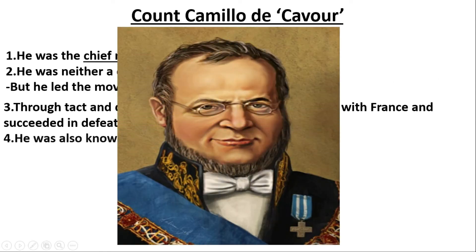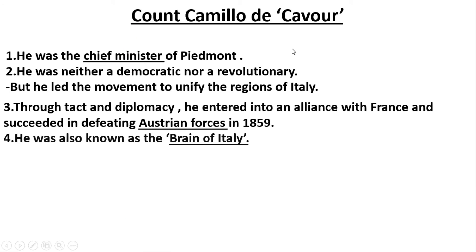Count Camillo de Cavour was the chief minister of Sardinia Piedmont. He was neither democratic nor revolutionary — meaning he did not rely on popular revolution to achieve his goals. He worked to unite Italy through statecraft, believing all parts of Italy should be united under one king: Victor Emmanuel II, the King of Sardinia.